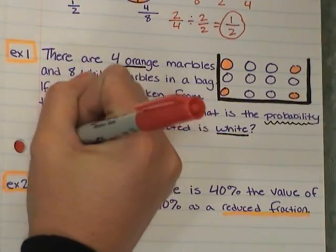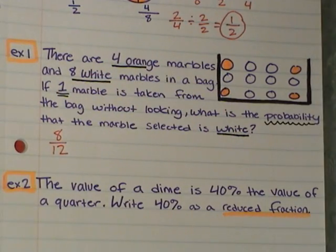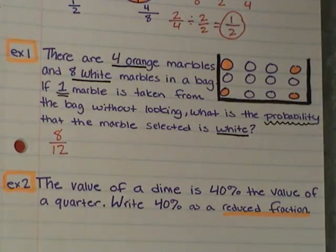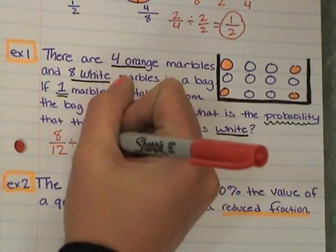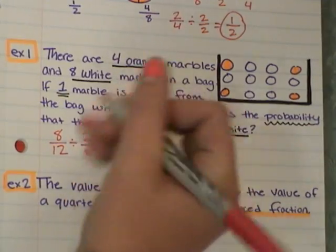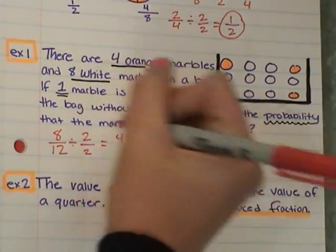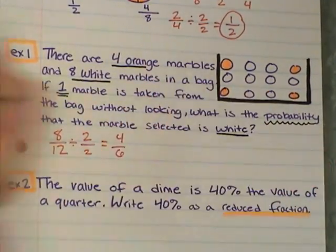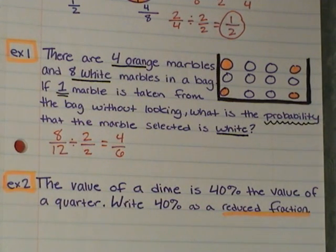8 out of 12 chances. So this is the probability that when we stick our hand in the bag and we pick out one that it's going to be white. We have 8 chances out of 12 to get a white marble. But again, we want to reduce. And if we look at this number, 8 over 12, obviously they're both even. 2 goes in. So I'm going to divide by 2 to reduce. 8 divided by 2, 4. 12 divided by 2, 6.